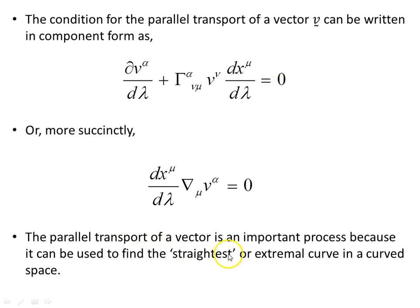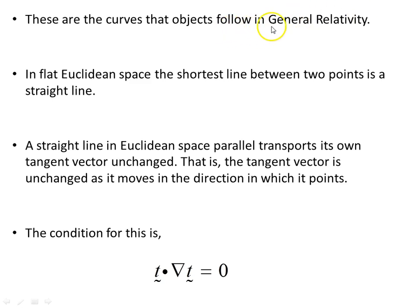The parallel transport of a vector is important because it can be used to find the straightest or extremal curve in a curved space — these are the curves that objects follow in the spacetime of general relativity. In flat Euclidean space, the shortest line between two points is a straight line, and a straight line parallel transports its own tangent vector unchanged — that is, the tangent vector is unchanged as it moves in the direction it points. The condition for this is the scalar product of the tangent vector with the covariant derivative of the tangent vector equals zero.